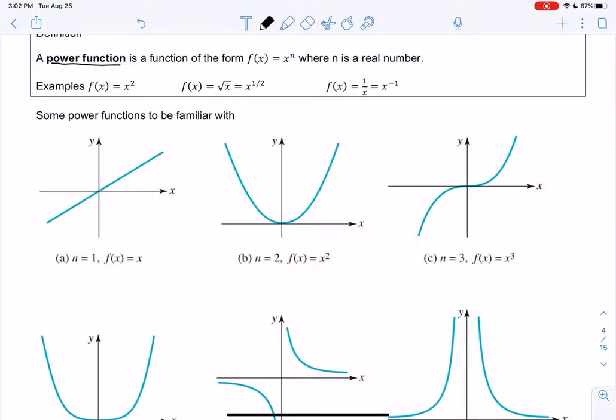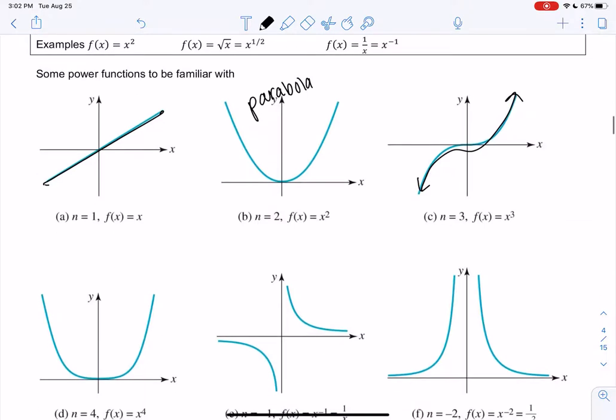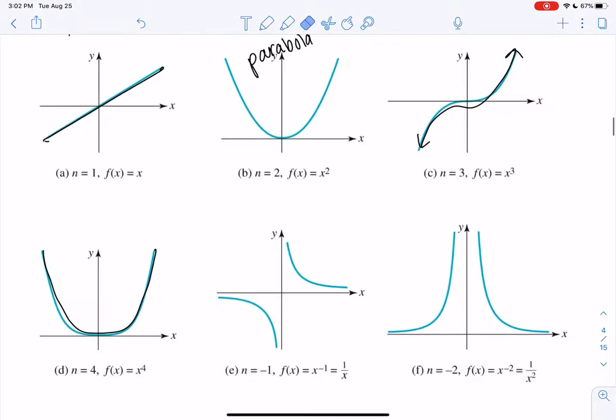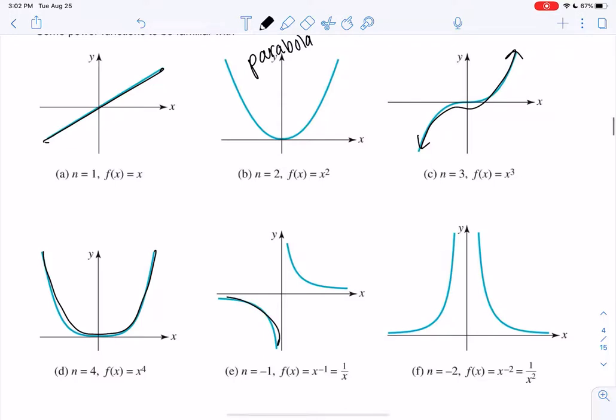We probably all remember that lines look like this. x squared makes a parabola. x cubed makes this shape. x to the 4th is kind of a parabola, it just gets a little flatter at the bottom. 1 over x makes this shape, because we had those asymptotes.